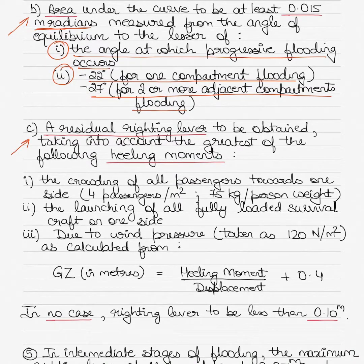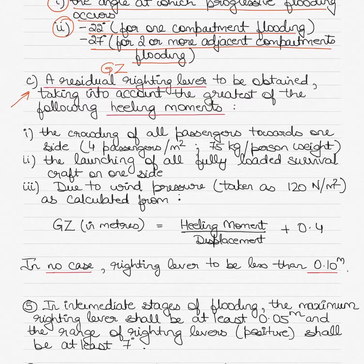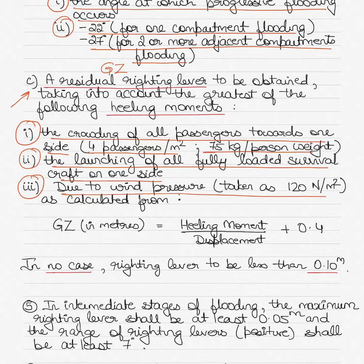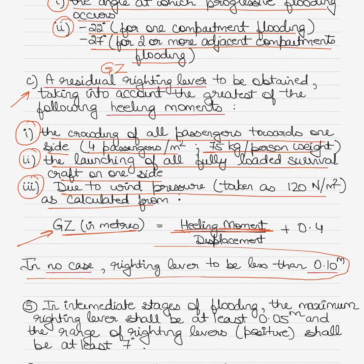The third condition is that a residual righting lever, or GZ, is to be obtained taking into account the greatest of the following heeling moments: firstly, the crowding of all passengers towards one side, where we consider four passengers per meter square and each passenger on average is about 75 kilograms. Secondly, if the launching of all fully loaded survival crafts is taking place from one side. Thirdly, due to wind pressure taken as 120 newton per meter square. The GZ calculated should be at least the heeling moment divided by the vessel's displacement plus 0.04, and in no case should the righting lever be less than 0.01 meters.